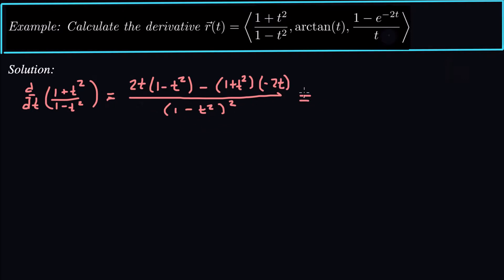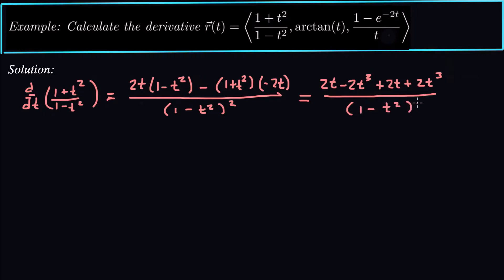Now we can do some algebra and reduce this. This gives us 2t - 2t³, and then minus minus is plus, so plus 2t + 2t³, all over (1 - t²) squared. We have some cancellations: the 2t³ terms cancel, so this is really just 4t over (1 - t²) squared. We won't expand that bottom — it doesn't get us anything new. That's the derivative of the first component.